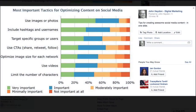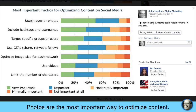The first thing we're going to look at is this graph from Adobe, based on a survey of their customers asking what is the most important tactic for optimizing content on social media. The top item says use images or photos, so marketers agree that images and photos are very important — ranked much higher than hashtags, specific groups or users, call to actions, image size for each network, using videos, or limiting the number of characters. This is a ranking of the most critical tactics for creating successful, effective social media content.